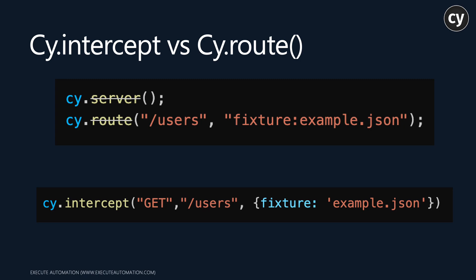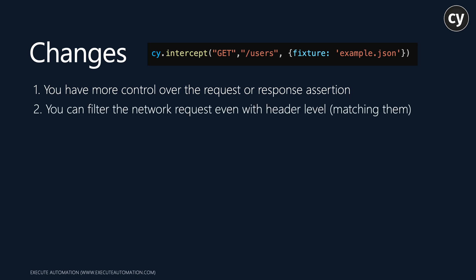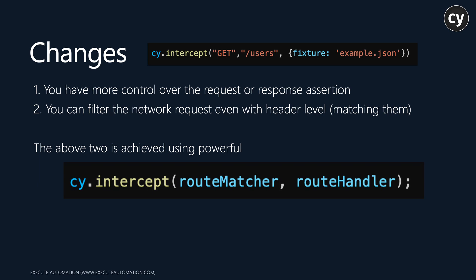With cy.intercept, the fixture is now a parameter you can specify. You have many different ways to work with it. The changes in terms of the whole intercept include more control over request and response assertions, and you can filter network requests even with header-level matching. These things are possible because of the powerful route matcher and route handler options available within cy.intercept.